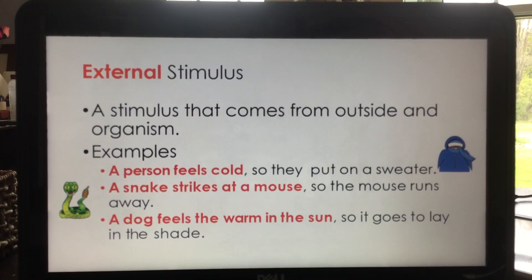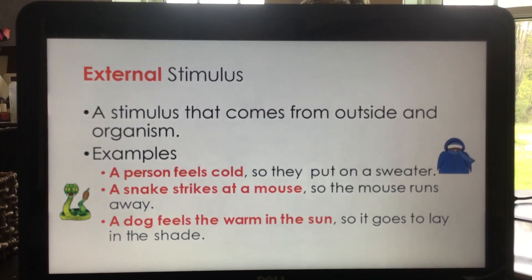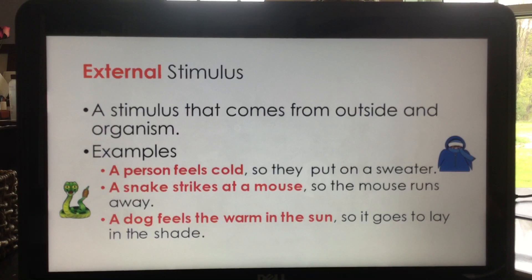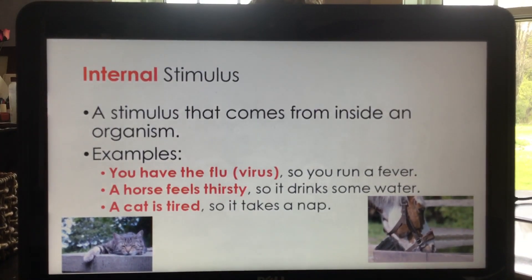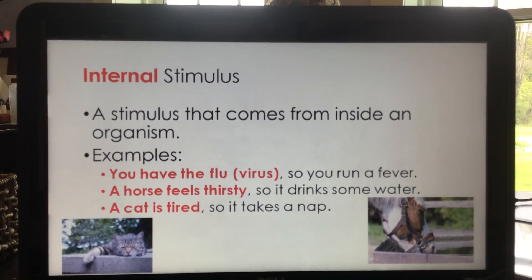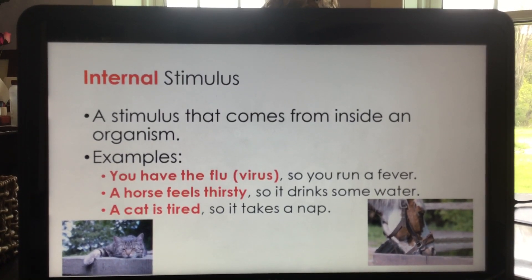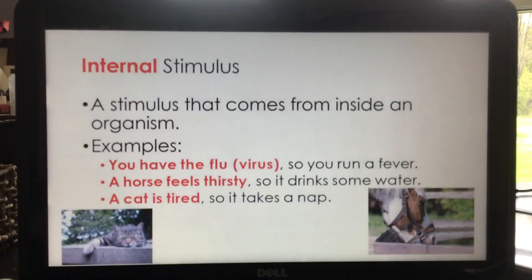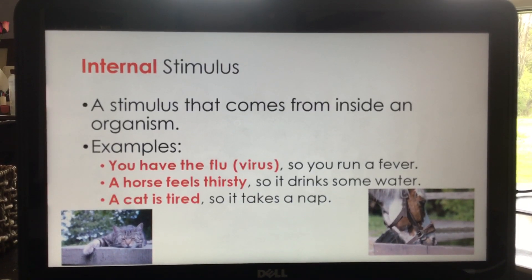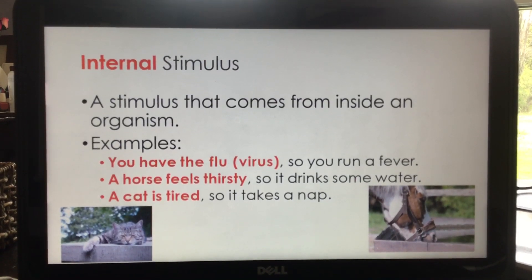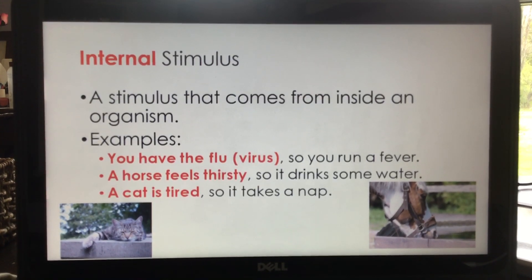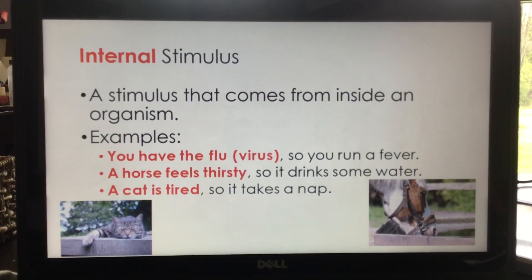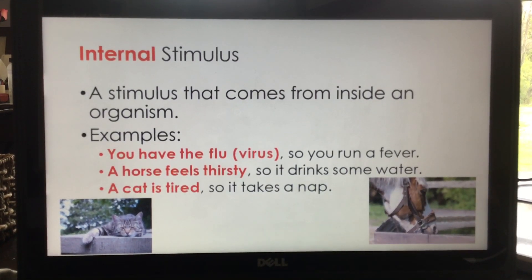Internal stimulus is a stimulus that comes from inside an organism. For example, you have the flu — a virus — so in order to combat that, your body responds by running a fever. A horse feels thirsty, so it drinks some water. Your cat is tired, so it takes a nap. These are all examples of internal stimulus.